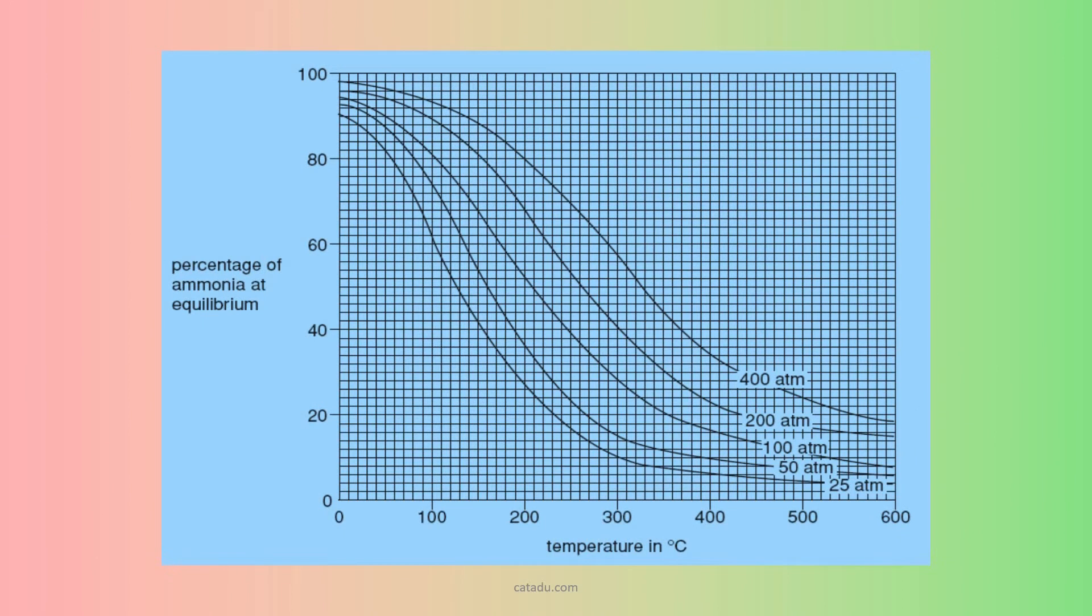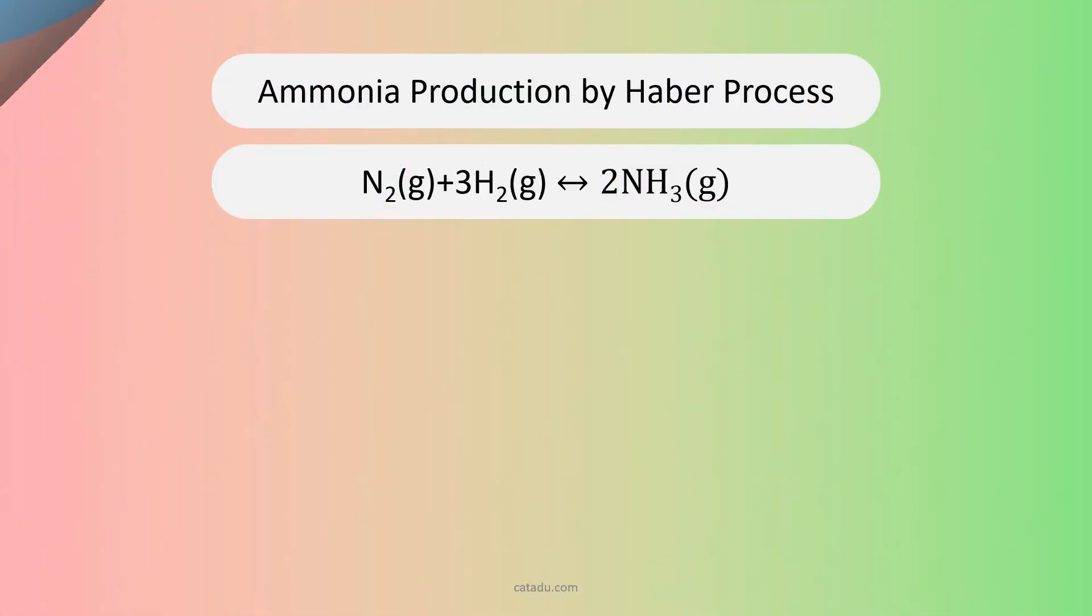The equilibrium will decrease. The lower temperature equilibrium will be higher, but the speed will be lower. So, we don't use very high temperature. So, the optimum temperature is 450.